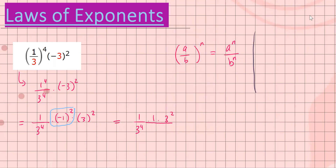From laws of exponents, if you have a to the n over a to the n, same base means we can subtract the exponents — that's a to the n minus n. Using that power rule, we have three squared over three to the fourth. I can subtract their exponents: base three, two minus four, which gives three to the negative two power.